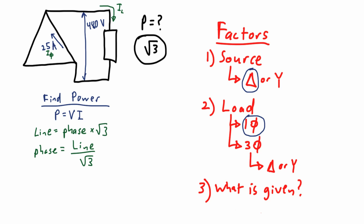So with the line voltage being given, we convert the phase current to line current. That means we multiply 25 amps by root 3, and it will give us this line current, which is 43.3 amps.